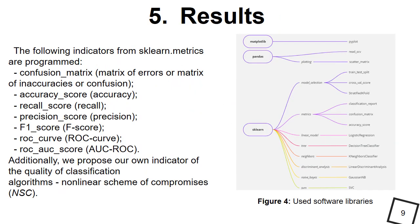Scikit-learn Python contains many built-in features for analyzing the performance of models. In this task we use some of these metrics and have written our own quality assessment function from scratch to compare them with known ones. Additionally, we propose our own indicator of the quality of classification algorithms: non-linear scheme of compromises. The libraries presented in Figure 4 were used for software development.